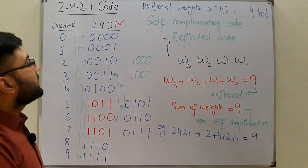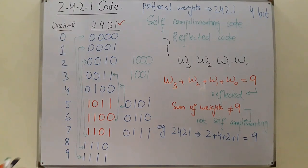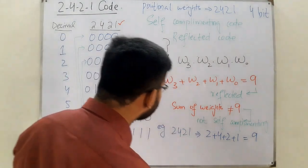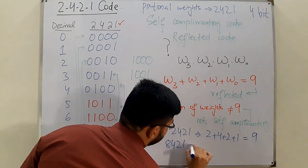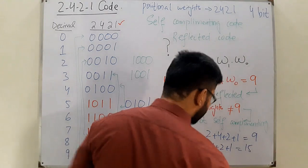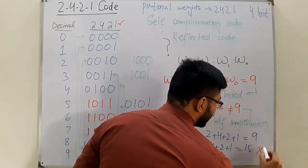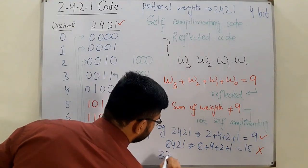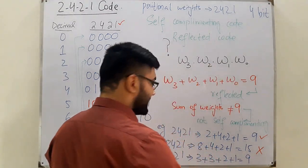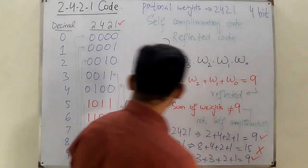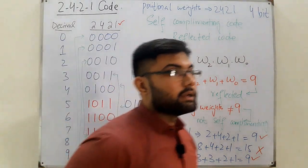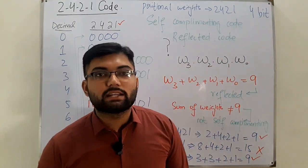Let's verify through examples. For the 2421 code: 2+4+2+1 = 9, so it is self-complementing. The Excess-3 code is an unweighted code but is still self-complementing — the only unweighted code we've discussed that is. For the 8421 code: 8+4+2+1 = 15, which is not 9, so it is not self-complementing. Another self-complementing code example is 3321: 3+3+2+1 = 9, so it is also a self-complementing or reflected code. That's all for this lecture — take care, goodbye.